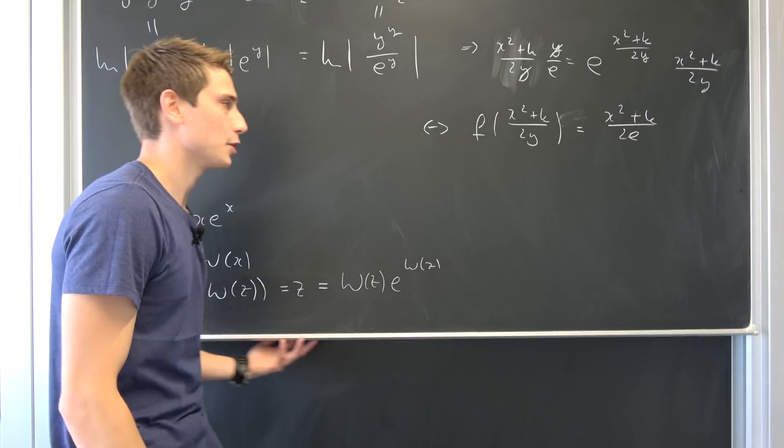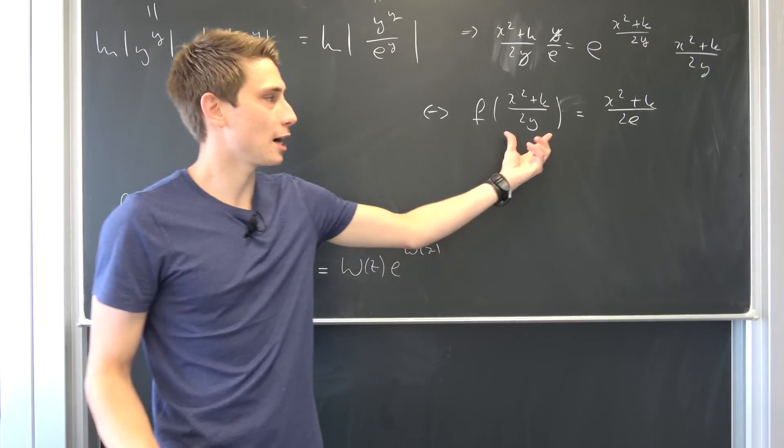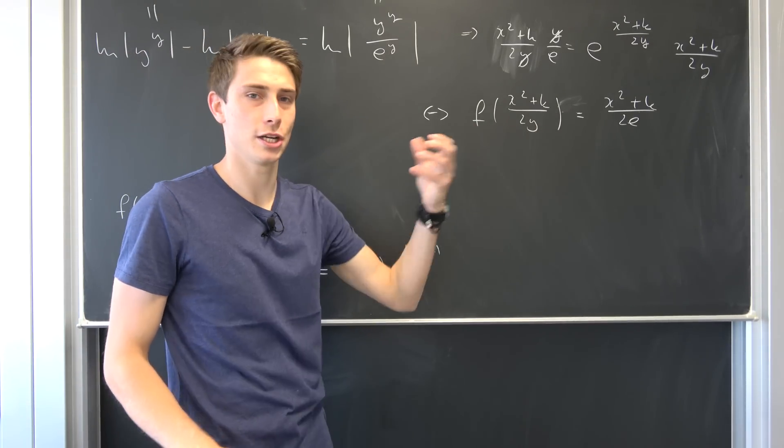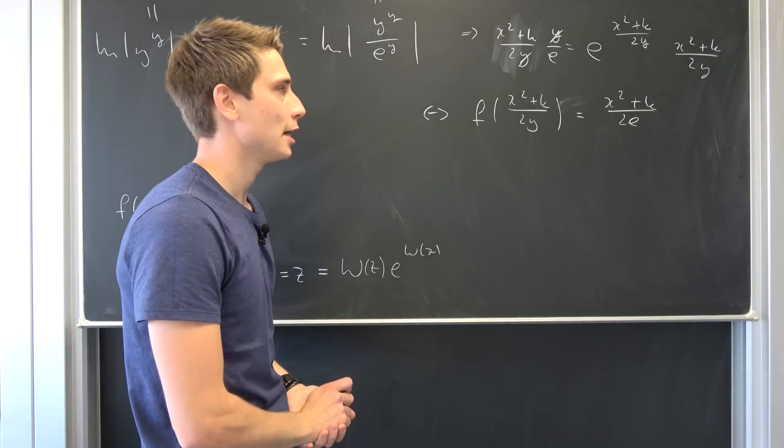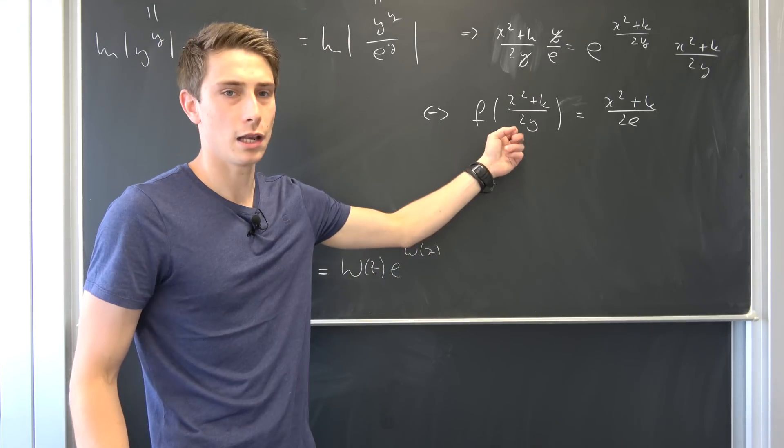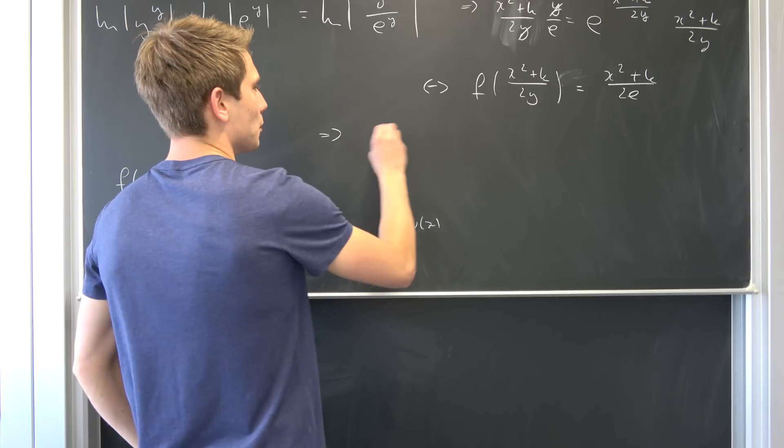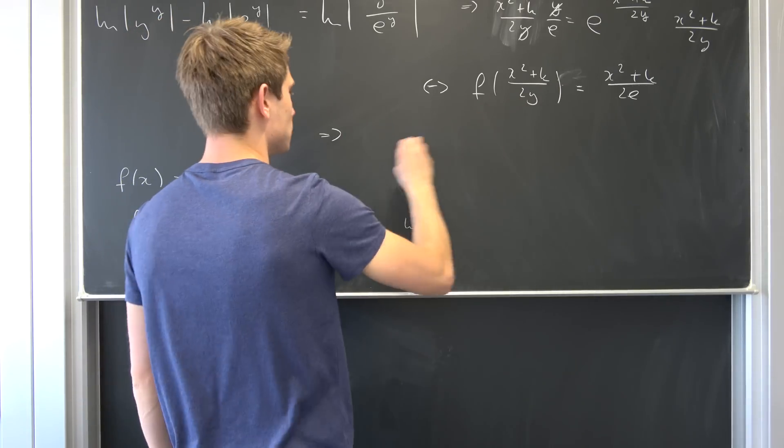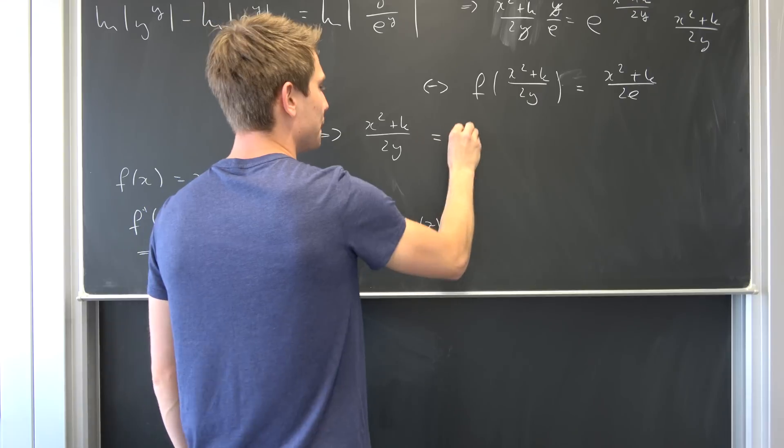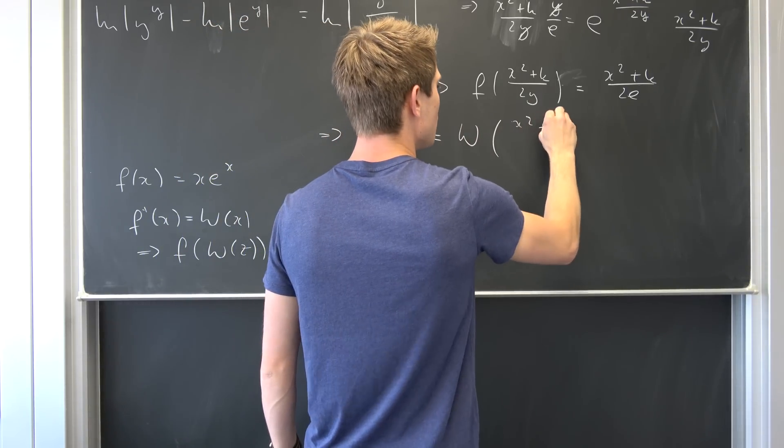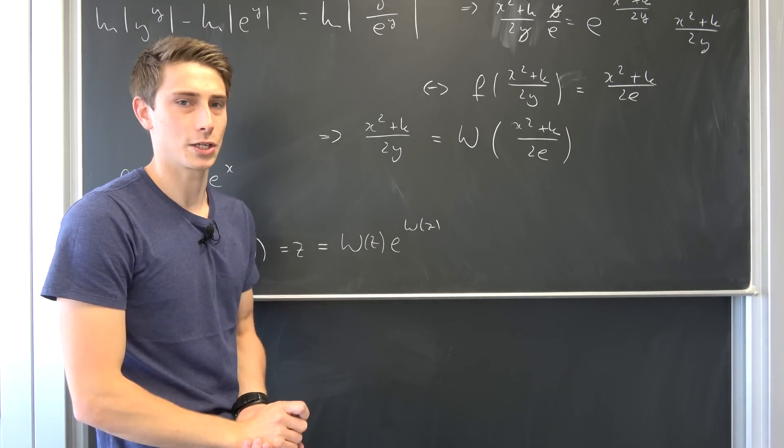And you see if we would now use the Lambert w function on this thing right here we would end up with just the argument itself in here which has a y in it. So that's cool. So we were able to separate this a little bit. So if we use the Lambert w function on here we are going to end up with f of Lambert w of this thing. This is just x squared plus k over 2y being equal to Lambert w of x squared plus k over 2 times e. So this in itself is quite cool.